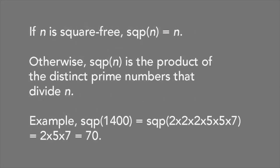In general, if n is square-free, the square-free part of n is just n. Otherwise, the square-free part of n represents what is left over after all the factors that create a square have been eliminated. In other words, the square-free part of n is the product of the distinct prime numbers that divide n.